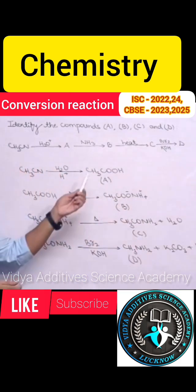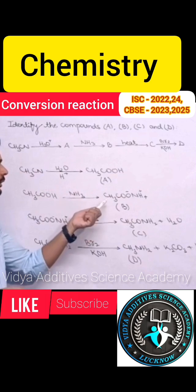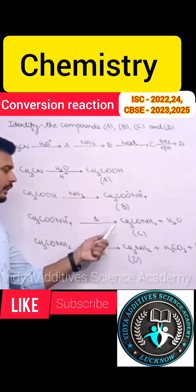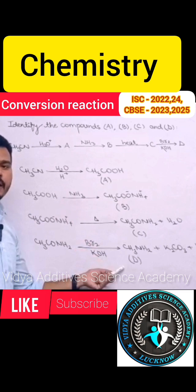So compound A is acetic acid, compound B is ammonium acetate, compound C is acetamide and compound D is primary amine.